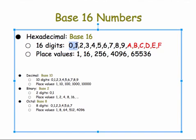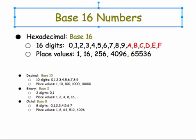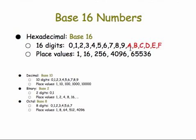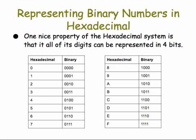Another base used frequently in computer science is base 16, or hexadecimal. It has 16 digits, 0 through F. We use our standard digits for the first 10 digits, and then A through F for 10, 11, 12, 13, 14, 15. The place values for hexadecimal numbers are all powers of 16: 1, 16, 256, and so forth. Base 16 numbers have the nice property that all 16 digits can be represented in 4 bits, from 0000 to 1111.